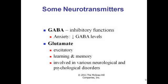Another important neurotransmitter is GABA, one of the inhibitory neurotransmitters. There are basically two types: inhibitory and excitatory. Excitatory neurotransmitters send a message to the next cell to fire and activate. An inhibitory neurotransmitter is essentially an off switch — it puts the brakes on, saying stop releasing and stop sending messages. GABA is inhibitory, while glutamate is an excitatory neurotransmitter with various functions across the body.